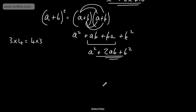Be careful there — those two middle terms are exactly the same, so collect like terms to get 2ab.